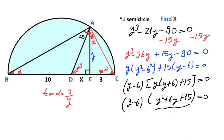Note that for the quadratic factor y² + 6y + 15, the discriminant delta is less than 0, so there are no real roots. Therefore y is going to be 6 units. So y equals 6.